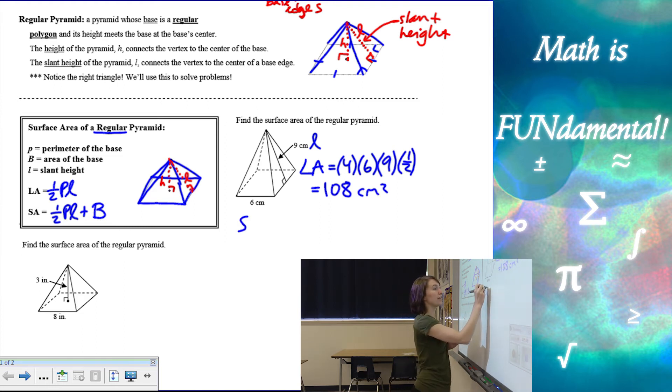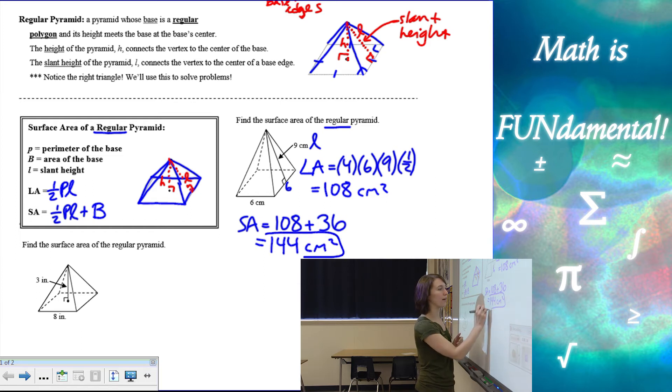Then our surface area is going to be that lateral area plus the area of the base. They told us it was a regular pyramid, so I can assume this is a square. So my area of the base is going to be 36, which gives me a total of 144 centimeters squared.